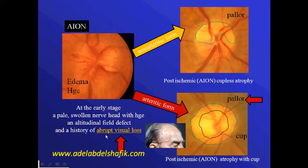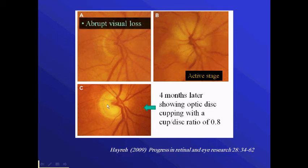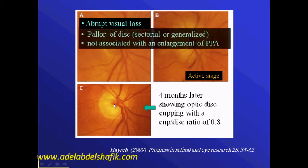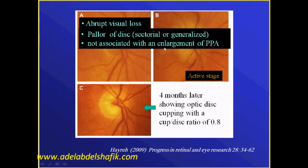And the history of abrupt visual loss. Another example: in the active stage of ischemic neuropathy and later there is marked cupping, but there is abrupt loss of vision and pallor of the neural rim. Another characteristic is that these changes are not associated with enlargement of the parapapillary atrophy.